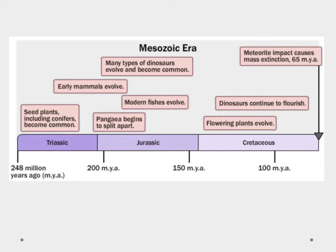The Mesozoic Era covers a period of time from about 250 million years ago to about 65 million years ago. In this time we have three different periods: the Triassic, the Jurassic, and the Cretaceous Period.